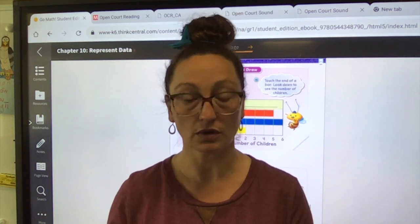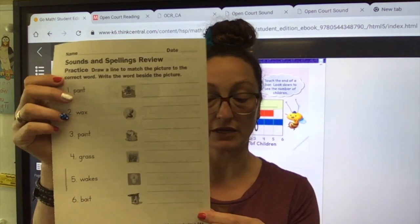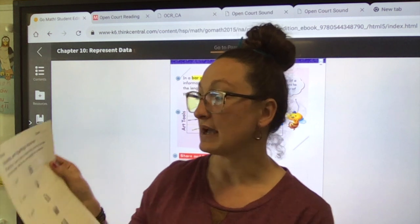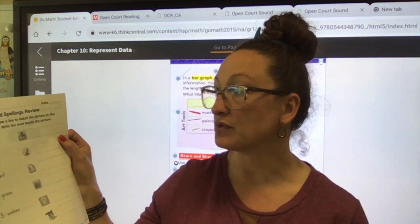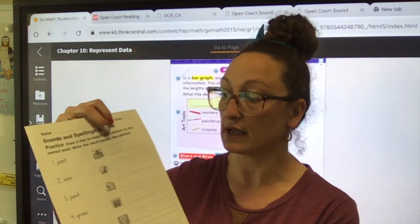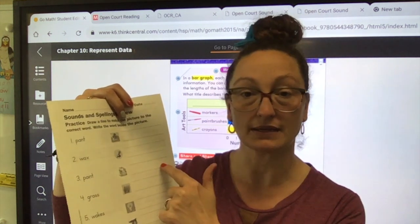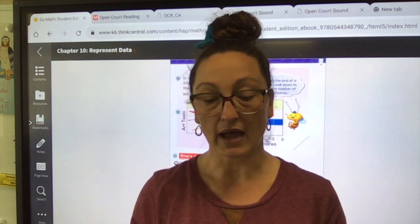Okay so that's that. We're working on long A, it's review. So all you have today is this worksheet, page 161-162. Practice: draw a line to match the picture to the correct word, write the word beside the picture. Okay, so I'm going to sound out my word, find the picture that matches and write it nice and neat on the dotted line.